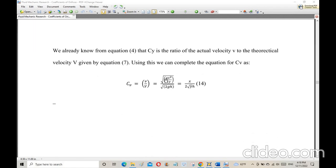We already discussed the equation for Cv, which is the actual velocity over the theoretical velocity. When we plug in the equations we derived and simplify, we get Cv equals x over 2 times square root of y times h.